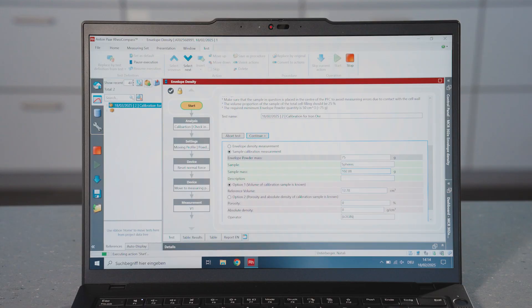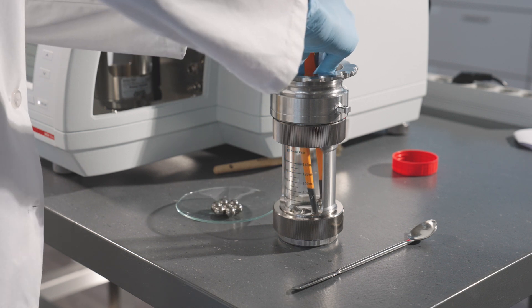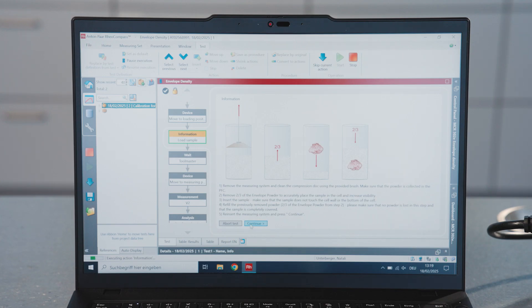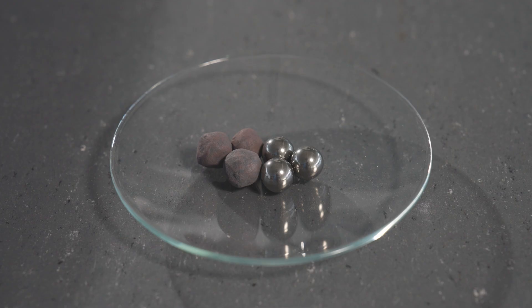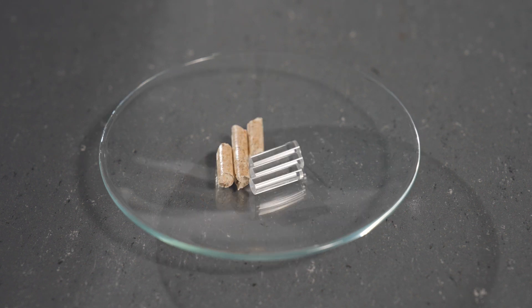Start the measurement in the same sequence as standard sample measurements. Insert the calibration sample and finalize the measurement by pressing Continue. The calibration sample must be made of the same material and have the same size and shape as the sample in question.